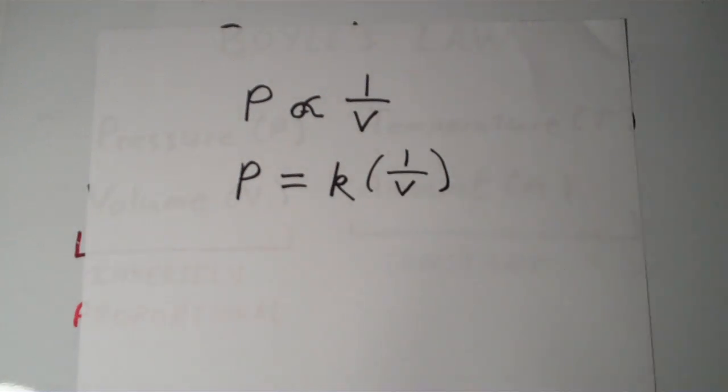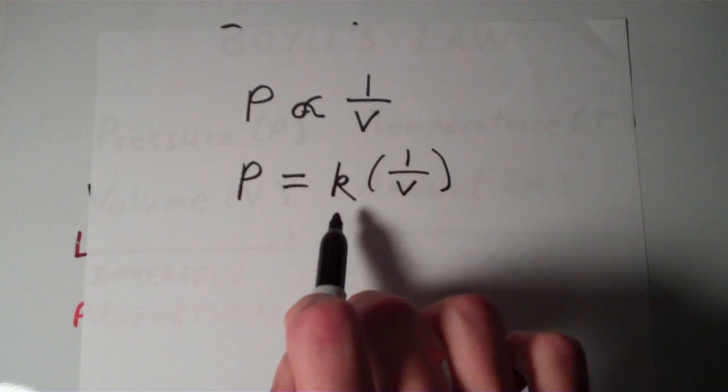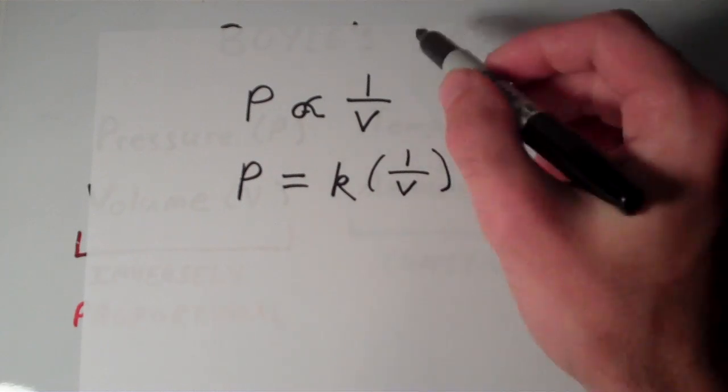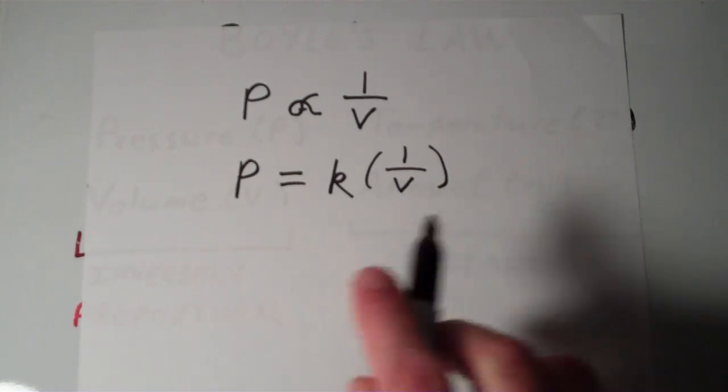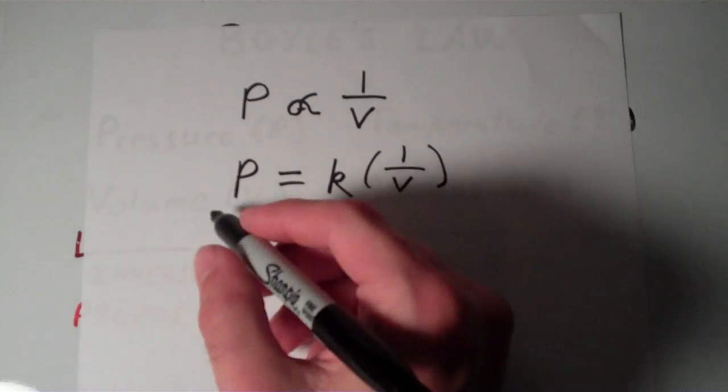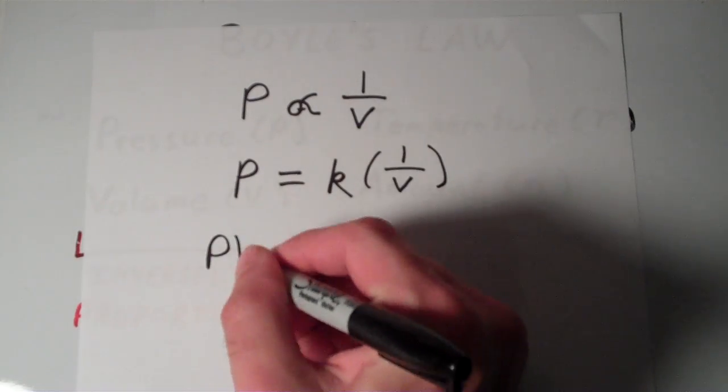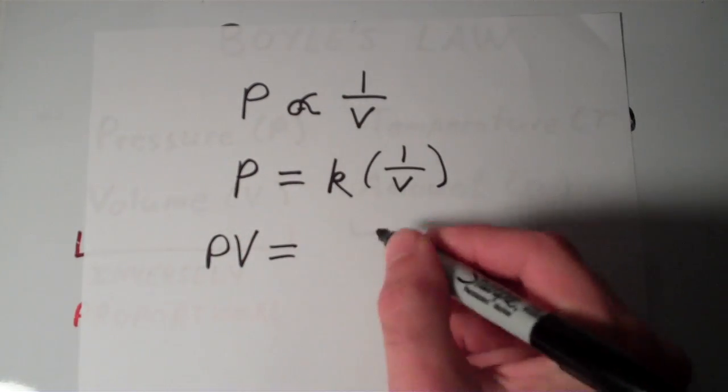So we no longer have a proportional symbol, we now have an equal sign, and we now have this constant of proportionality. So these two equations are basically saying the same thing. We can rearrange this equation further by multiplying both sides by V, and we'll end up getting that PV, P times V, is equal to k.